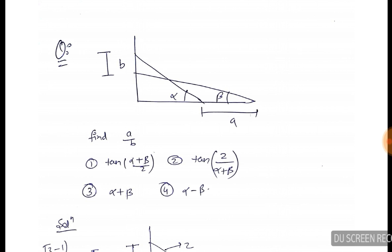So the A by B value is tan(α + β)/2. We have tan(2) upon (α + β) and (α − β). Now listen — if you solve this question using the whole standard method, it will take a lot of time.